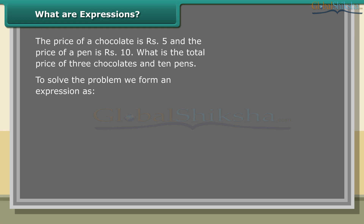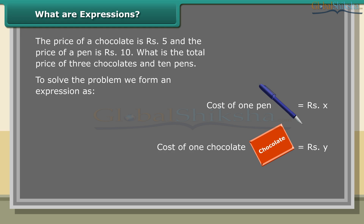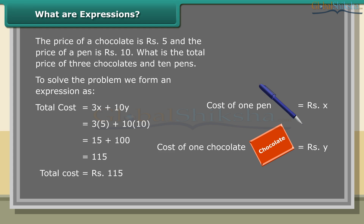Cost of 1 pen equals rupees x, cost of 1 chocolate equals rupees y, cost of 3 chocolates equals rupees 3y, and cost of 10 pens equals rupees 10x. Total cost equals 3x plus 10y, which equals 3 × 5 plus 10 × 10, which equals 15 plus 100 equals 115. Total cost is rupees 115.